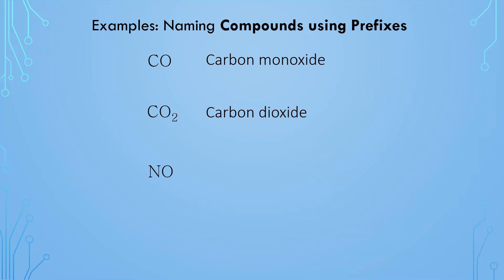Try this one: NO. Figure out the element names, how you're going to write them, and then the subscript with the corresponding prefix. N is nitrogen, O is oxygen. There is one nitrogen and one oxygen. I never put mono on the first element, so it's just nitrogen, and then monoxide. Oxygen became oxide, and the second element always gets a prefix no matter what.